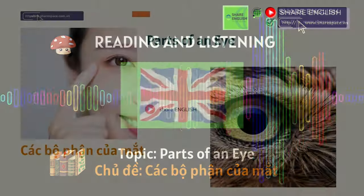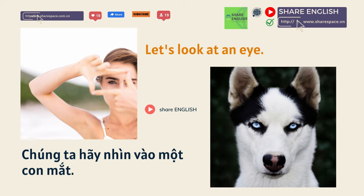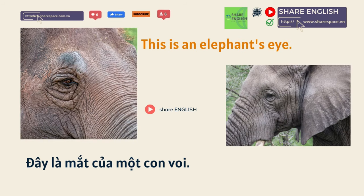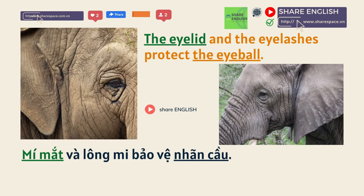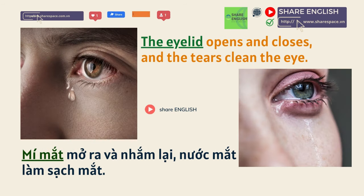Let's look at an eye. It has many parts. This is an elephant's eye. The eyelid and the eyelashes protect the eyeball. There are tears in the eye too. The eyelid opens and closes.